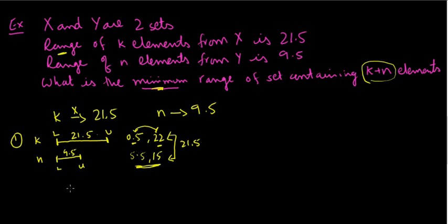So this is one scenario where N falls within K. Your N elements fall within K elements. So the range is the range of K. So that's one scenario. The other scenario is where actually N falls outside.